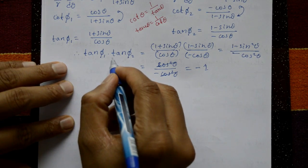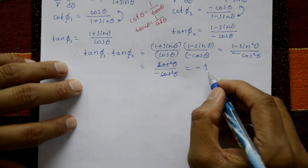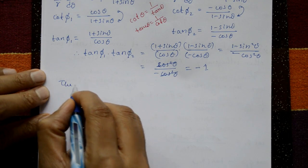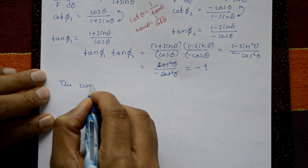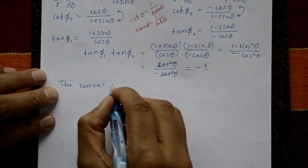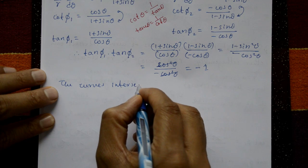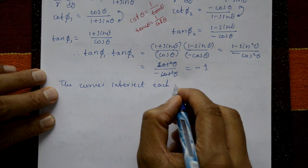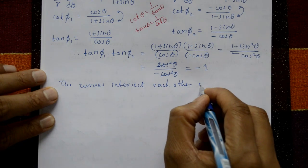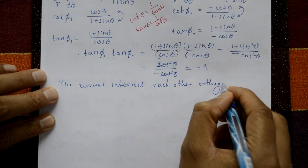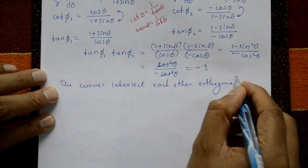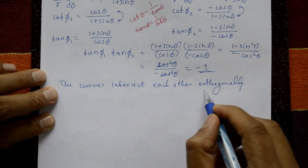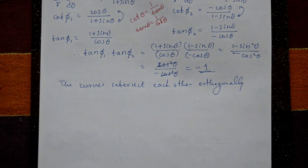The cos²theta cancels, giving tan φ₁ into tan φ₂ equals minus 1. This means the two curves intersect each other orthogonally. Since tan φ₁ · tan φ₂ = -1, the curves are orthogonal.